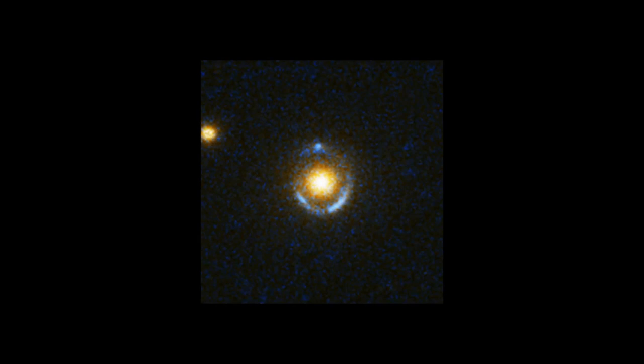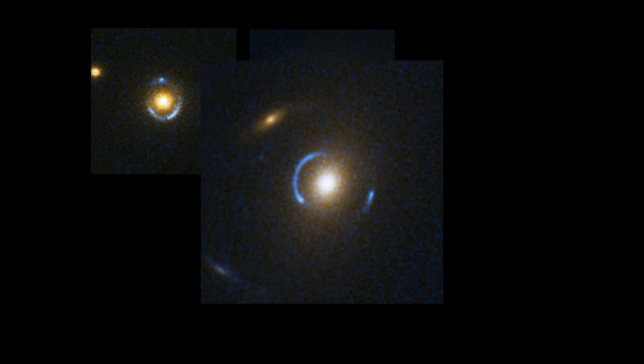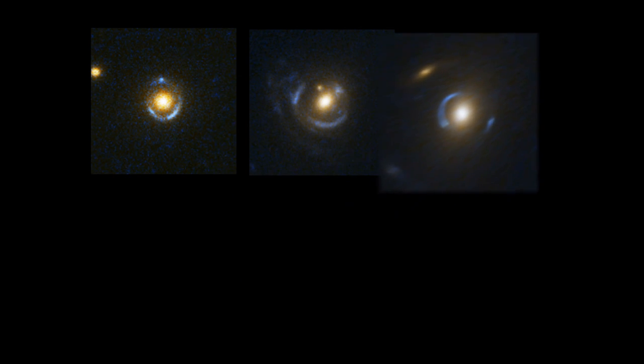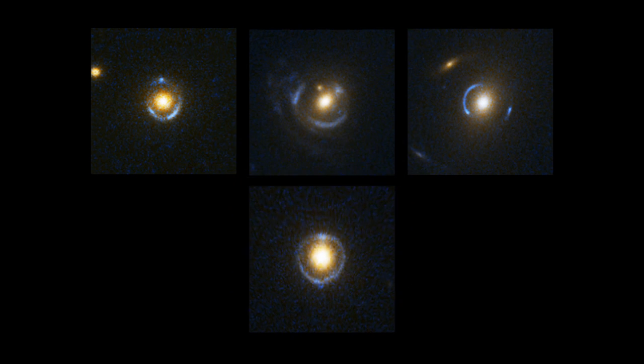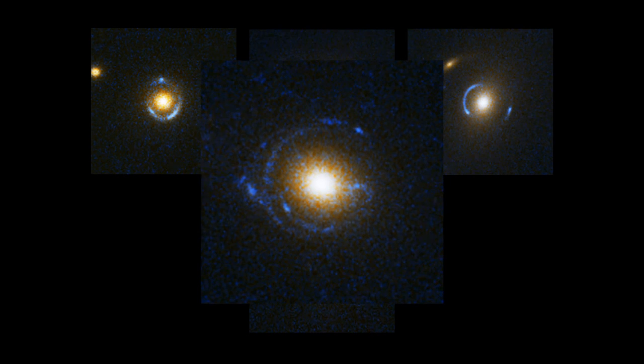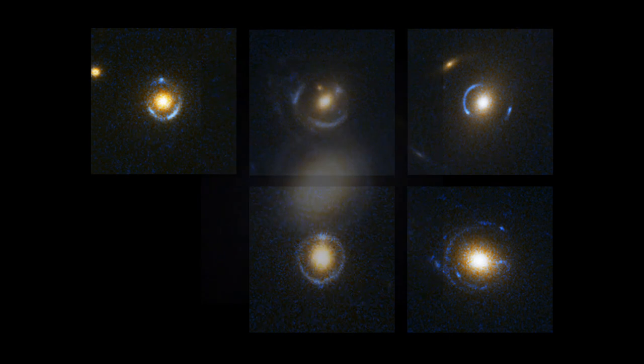Or, if everything is perfectly aligned, we see a ring of light encircling the huge galaxy in the foreground. These perfect rings, known as Einstein rings, are so rare that only a few handfuls have ever been observed in visible light.